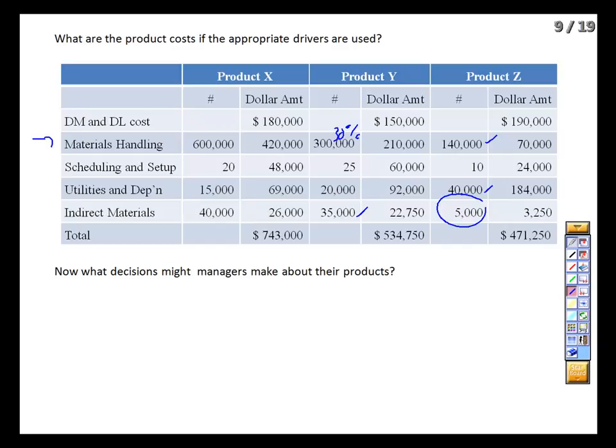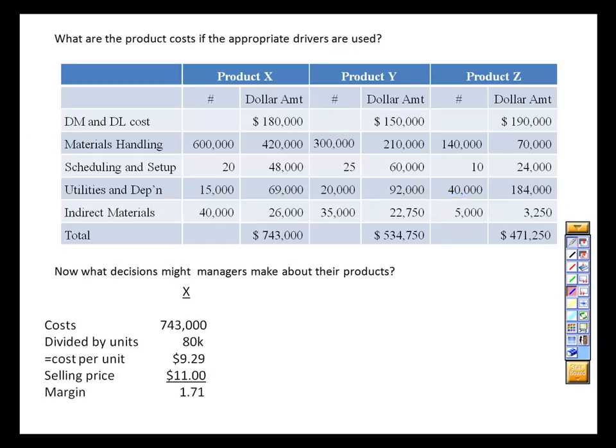Let's redo our analysis with our new costs. Product X costs us $743,000 to produce, and we've got those 80,000 units, so we're looking at a new cost of $9.29 per unit. It's costing us a little less to produce than we thought, and our margin has now increased to about 16%.